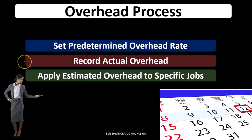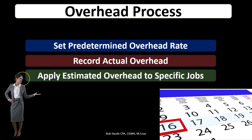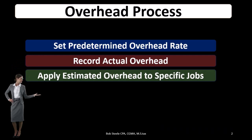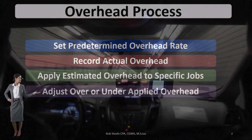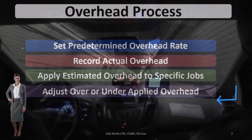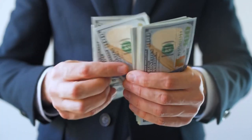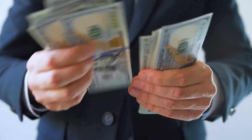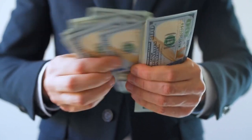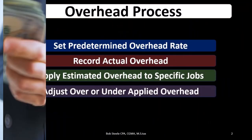We can't apply overhead on actual numbers because the month isn't over yet, and until it is, we don't know what overhead will be. So we have to use this estimate, projecting it at the beginning of the month. We'll record actual overhead as it comes in, apply it out as we get new jobs, and then adjust for under- or over-applied overhead at the end, since we're working with a predetermined estimate.